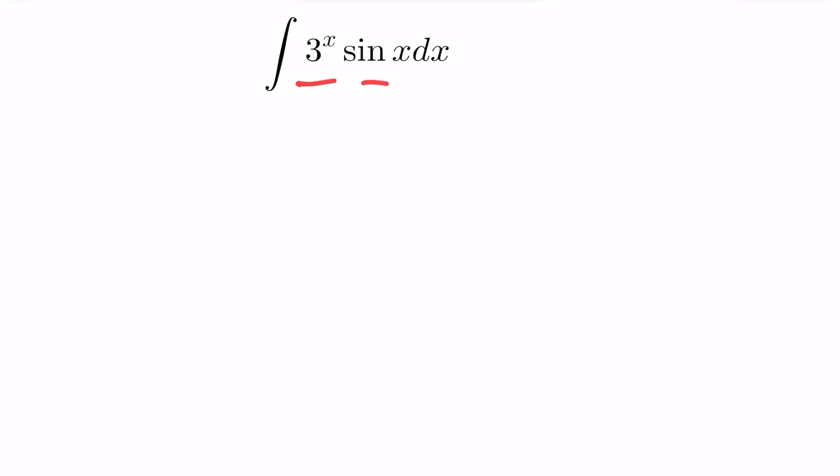Whenever you have these sort of cyclic relations where the derivative just keeps alternating back and forth, usually that's indication that you want to use integration by parts. So let's go ahead and do that.